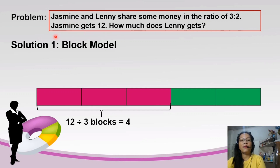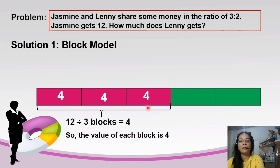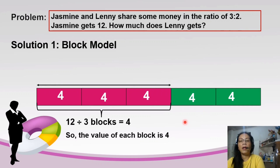Since the given is that Jasmine gets 12, let's make use of 12. We are going to divide 12 by the 3 pink blocks: 12 divided by 3 equals 4. Therefore, the value of each block is 4. The same is true with the green blocks — each block also has a value of 4.